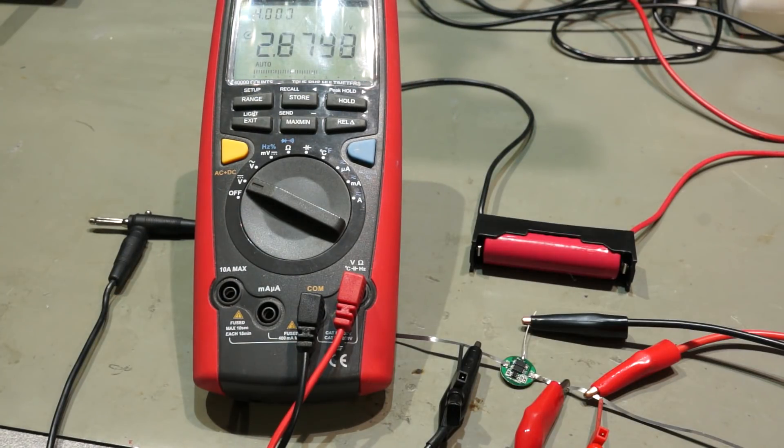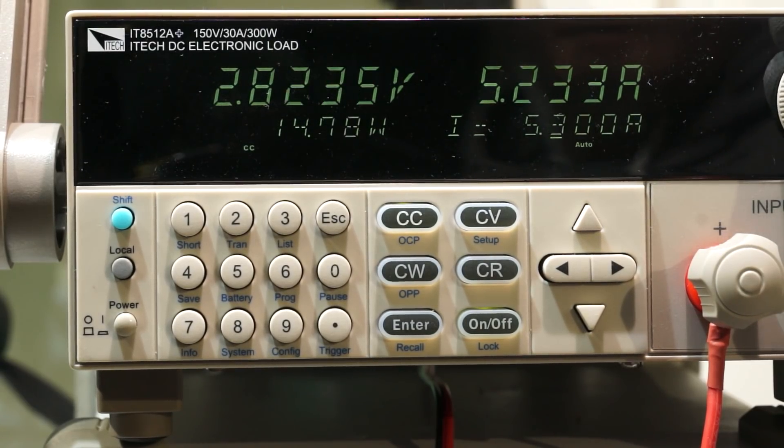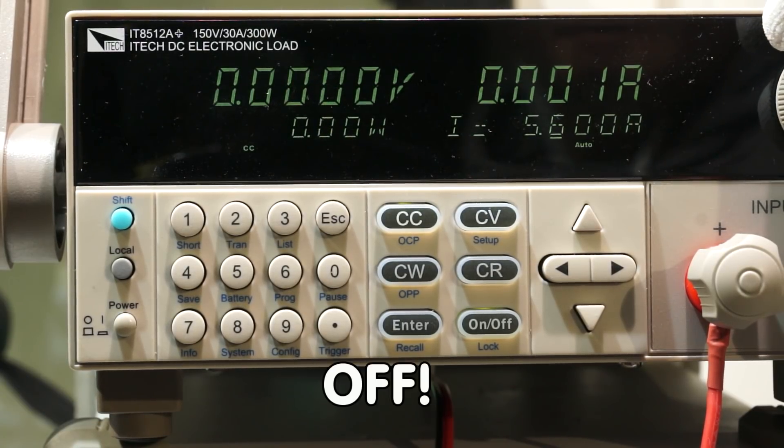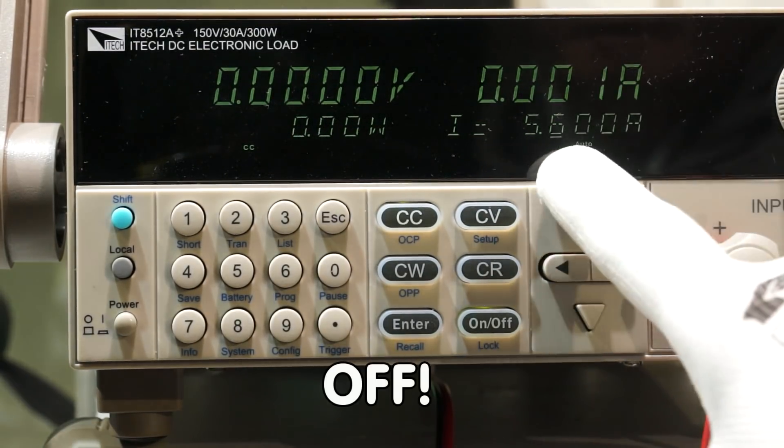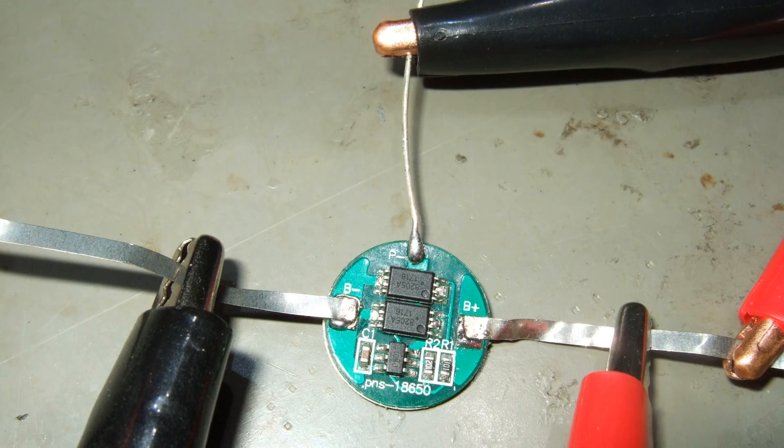And if we try to discharge the battery below 2.5V, the discharging also is switched off and remains off. The third test is the overcurrent protection. If I increase the current, it is interrupted and stays interrupted until I remove the load and apply it again. Also great! This small device really does what we expect.